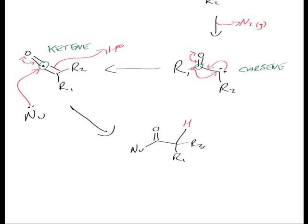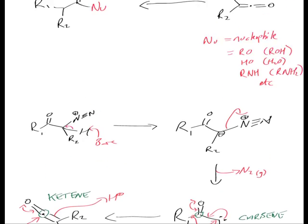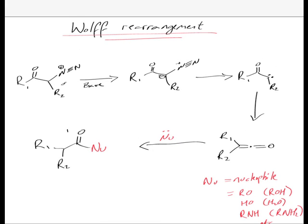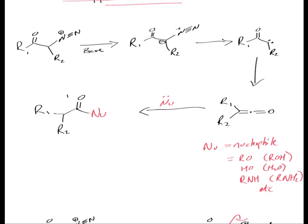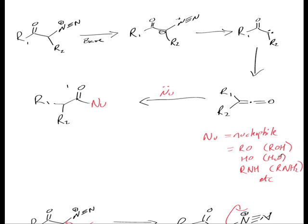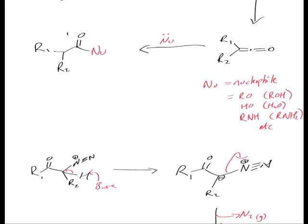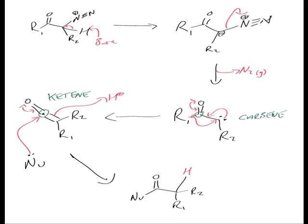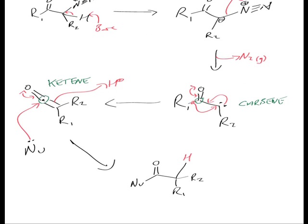So what you've done now is you've basically moved an R group next to another R group. If you look at the starting material, you've had a rearrangement from this R group moving over to here basically. And you've replaced the R group with some nucleophile. That nucleophile can be like I said here, it can be ROH, OH, NH, whatever you can imagine really, providing it works of course. So that is the Wolff rearrangement.